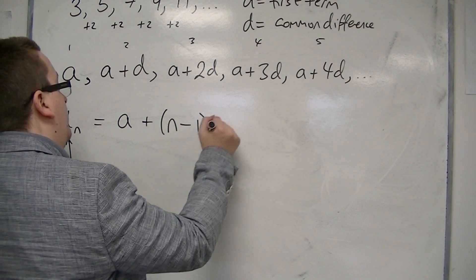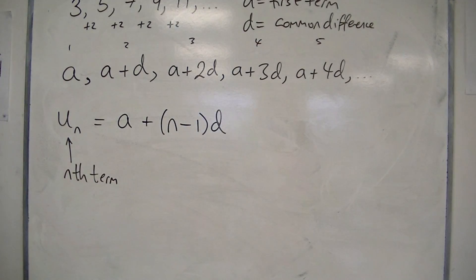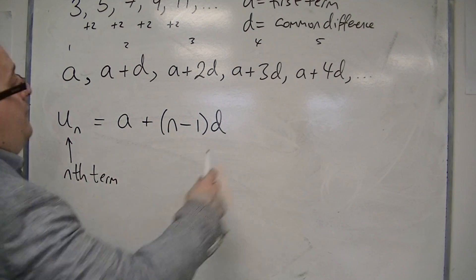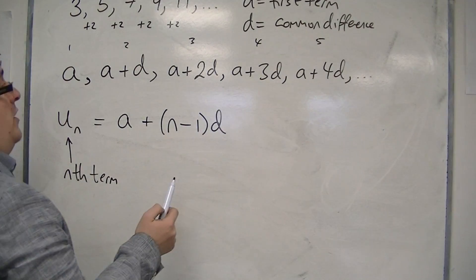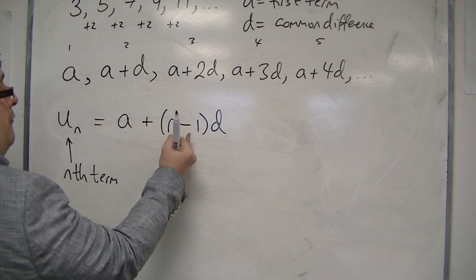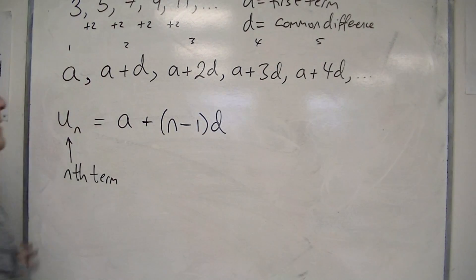So n minus 1, D would fit. So if I have n is 5, for example, for the fifth term, I would have A plus 4D, which I do there.